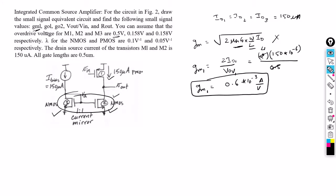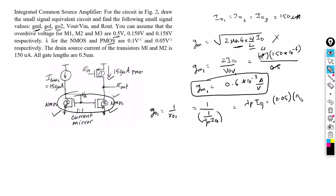Next, we find G01 and G02 for the first and second transistors. The first transistor is PMOS, so G01 = 1/RO1 = λP · ID1. With λP = 0.05 and ID1 = 150 microamperes, G01 = 0.05 × 150µA = 7.5 × 10⁻⁶ Siemens.